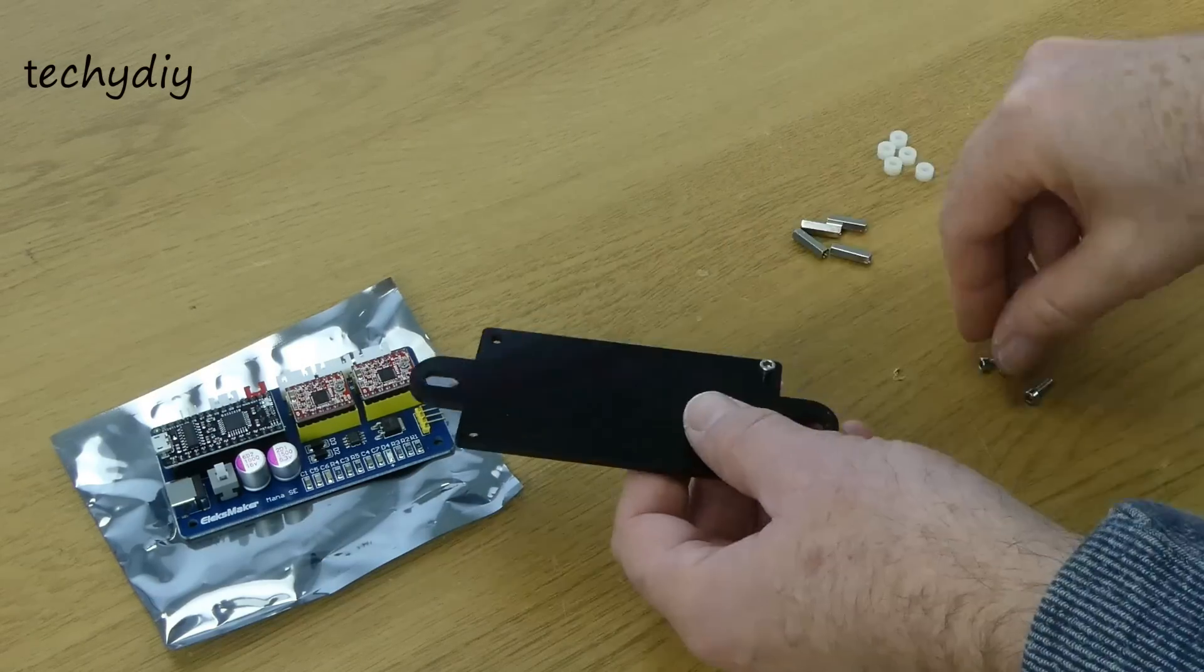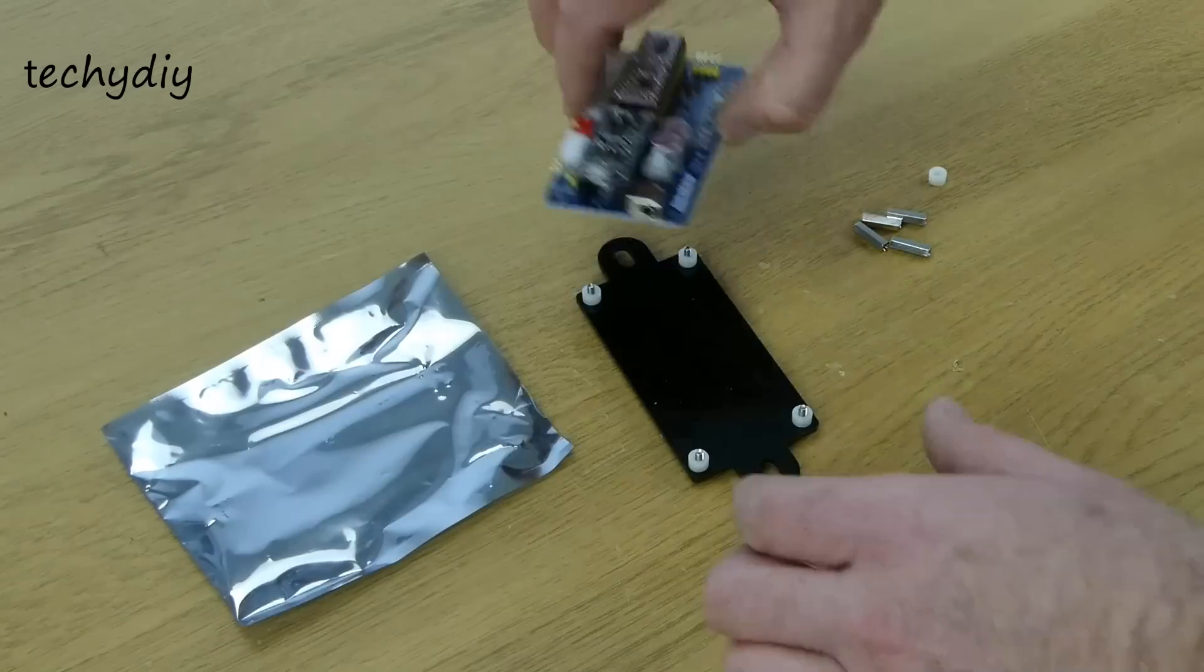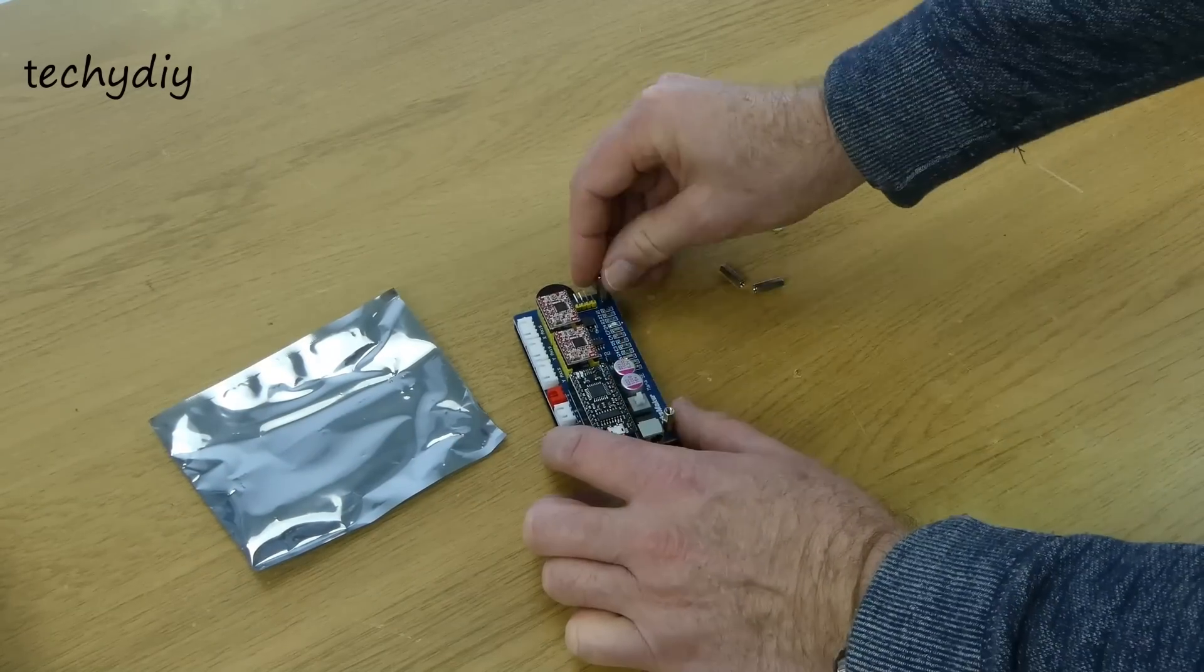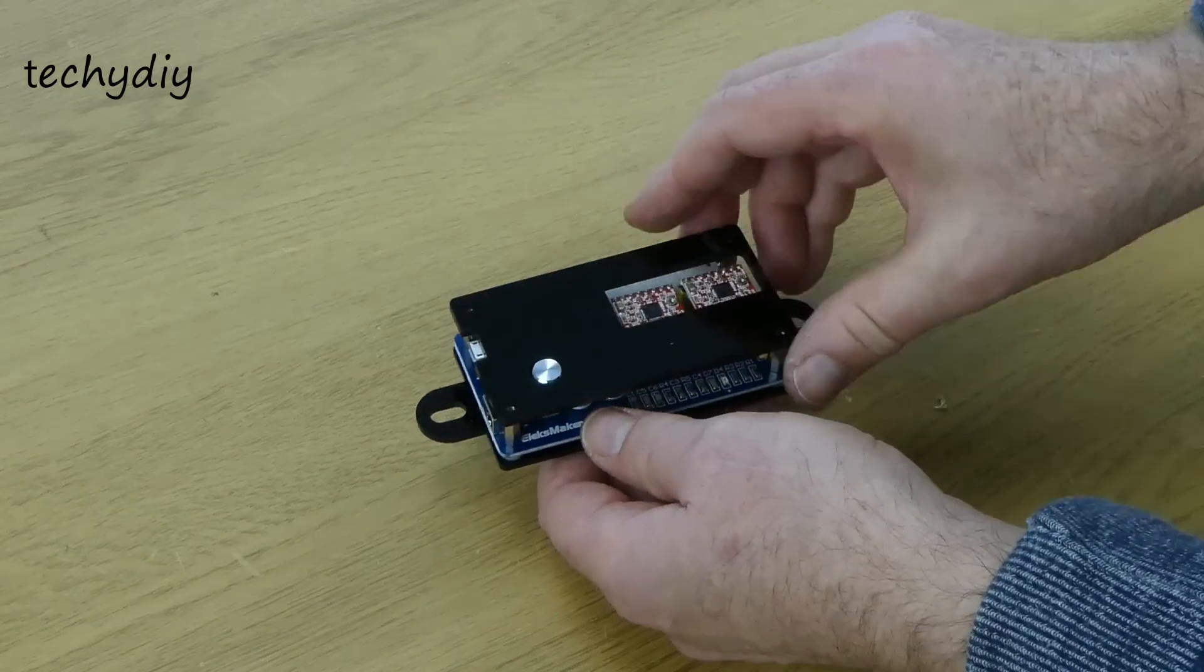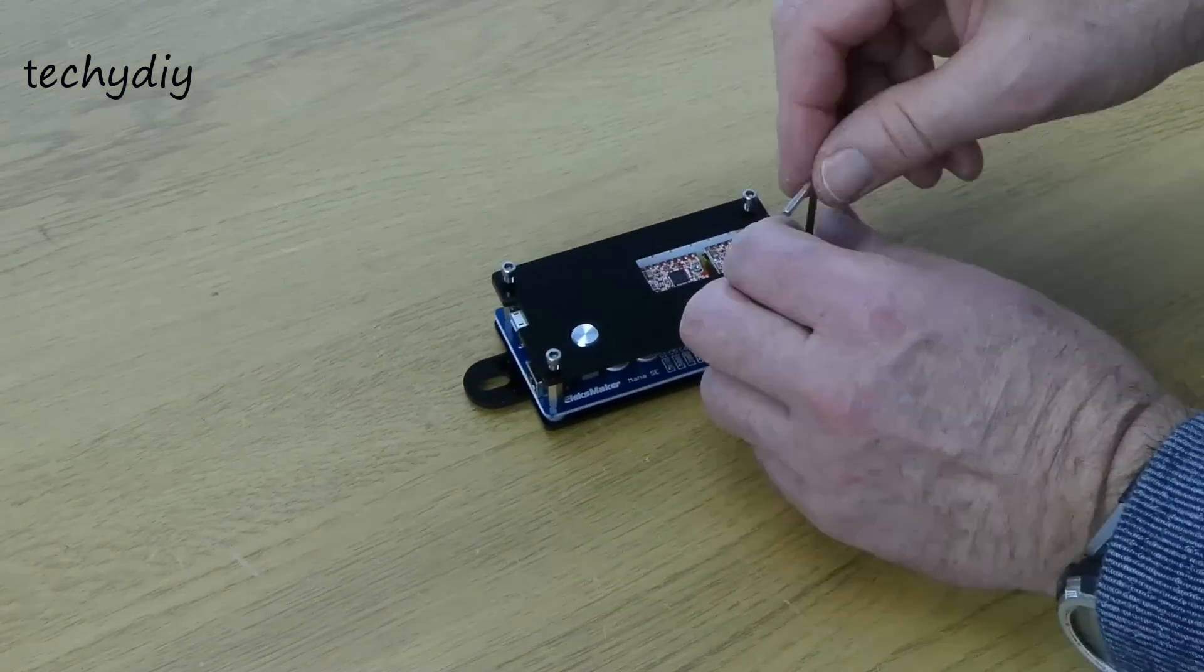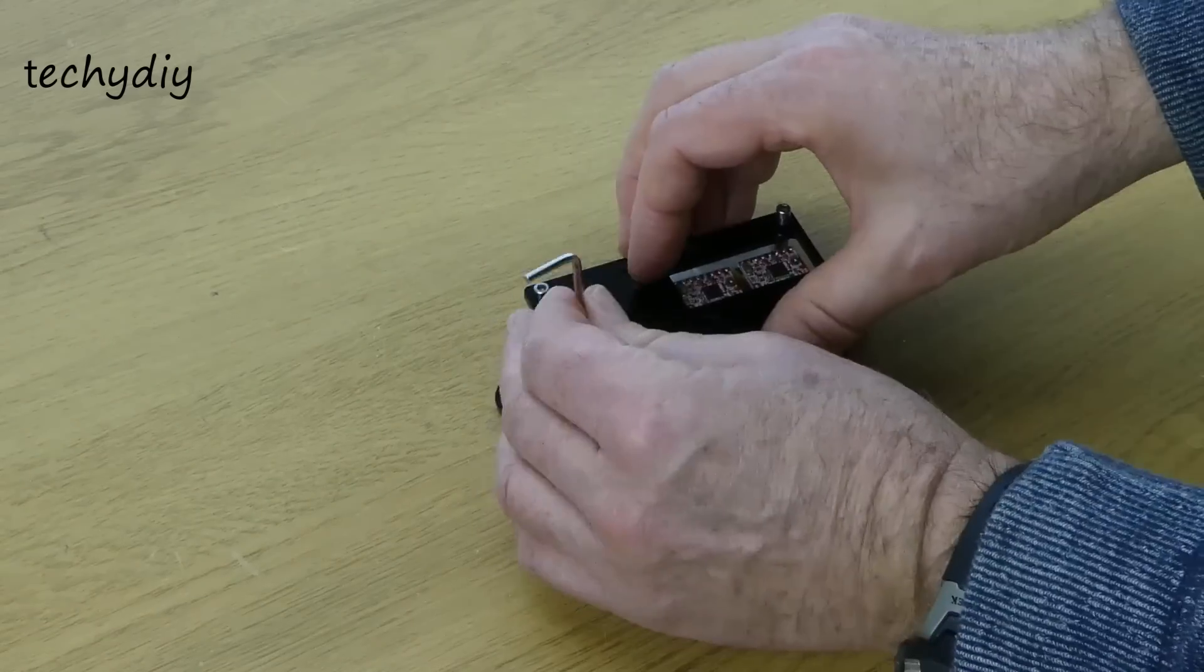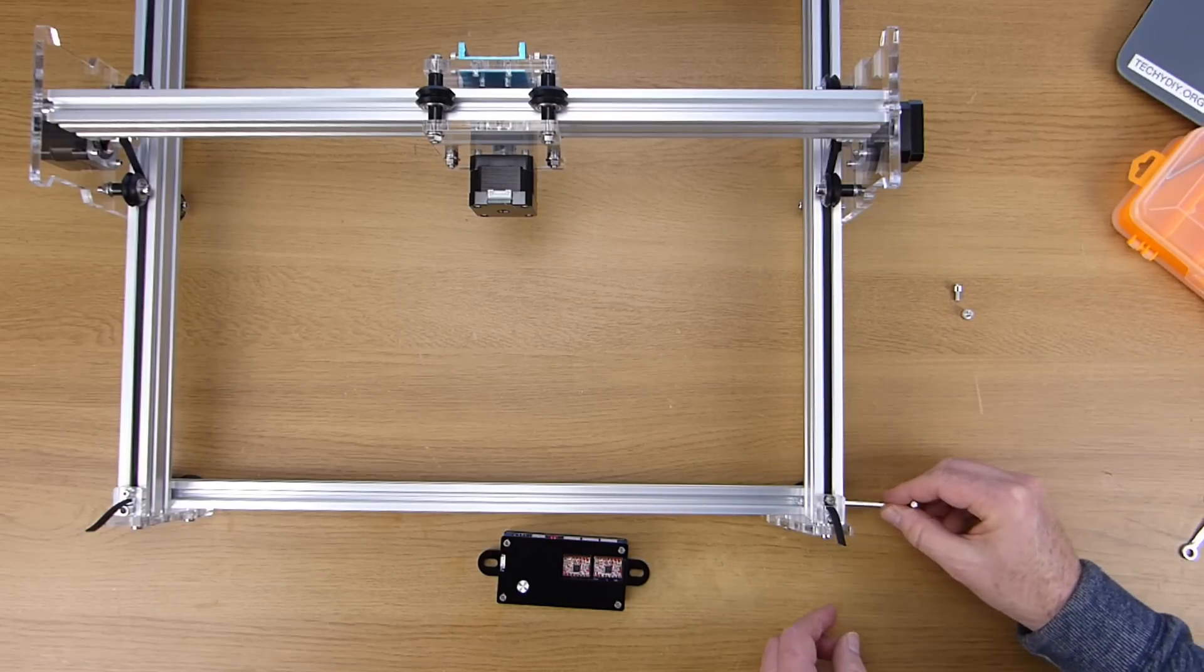The covers for the PCBs were screwed on using plastic spacers and metal standoffs. Then the PCB case was fitted to the frame.